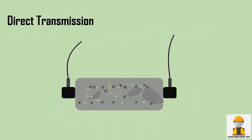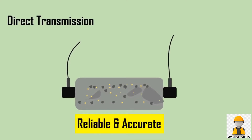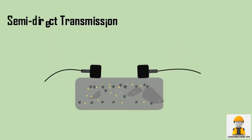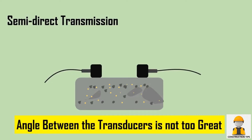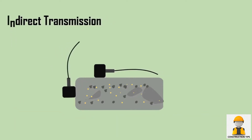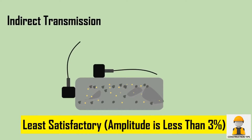The direct transmission is the most reliable from the point of view of transit time measurement and is accurate. The semi-direct method can sometimes be used satisfactorily if the angle between the transducers is not too great. The indirect method is the least satisfactory, since the received signal amplitude may be less than 3% of that for a comparable direct transmission.